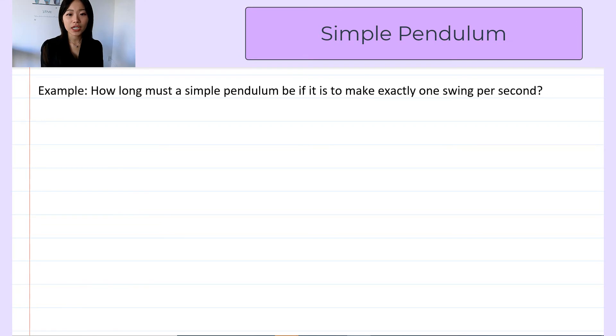And for one oscillation, it means the object goes back to its initial point. So imagine a pendulum, it will swing like this. Initial point, for example, it's here, then one period will be two swings.